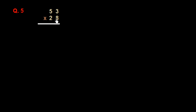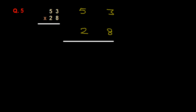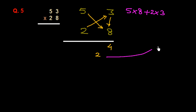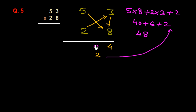Now the final example: 53 multiplied by 28. I write down 53 and 28 and draw a line. First we multiply the unit place vertically: 3 times 8 is 24. I write down 4 and carry 2. Then the crisscross multiplication diagonally: 5 into 8 plus 2 into 3, plus the carried 2. That is 40 plus 6 plus 2 is 48. I write down 8 and carry 4. Finally, we multiply the tens digits vertically: 5 times 2 is 10, plus carry 4 is 14. So the answer is 1484.